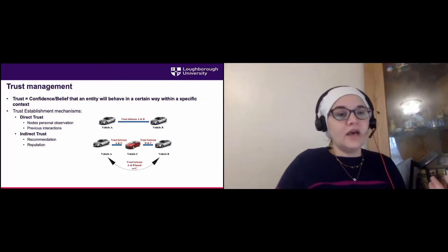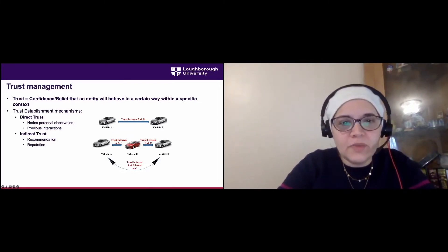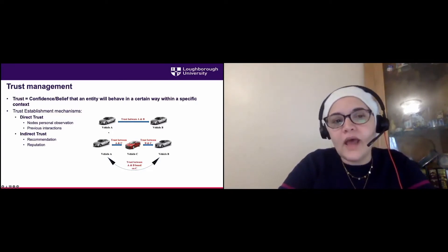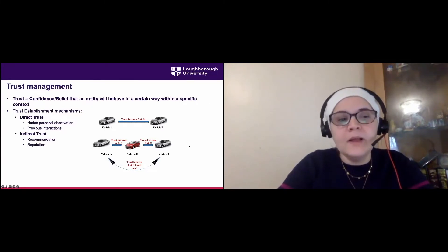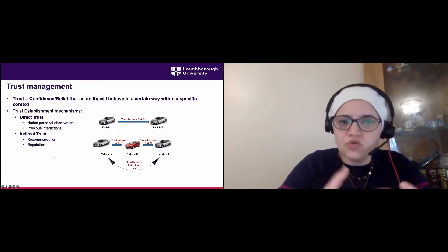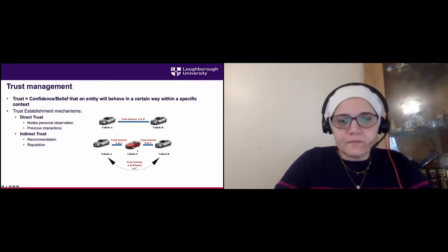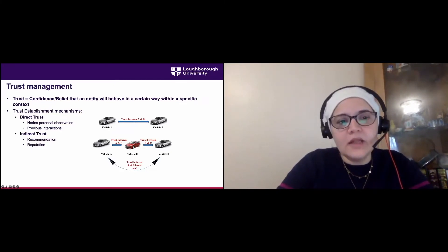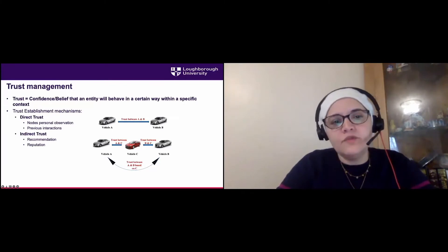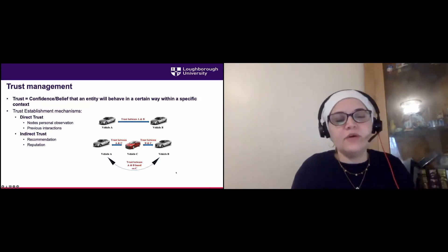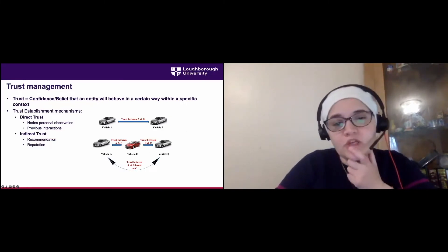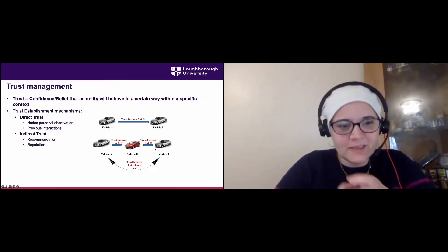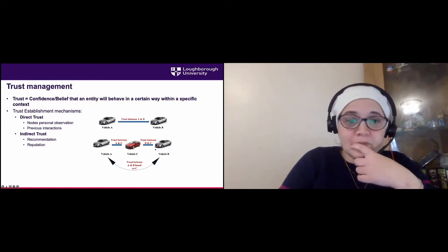We have two types of trust. Direct trust: vehicle A and B are neighbors within range, so A can observe B's behavior and messages and decide whether to trust B. Indirect trust — also called recommendation — is used to build reputation systems: vehicle A knows vehicle C, C knows vehicle B, so A uses C's recommendation about B. A can say 'I trust C so I'll trust their recommendation,' or 'I don't trust C, so I won't trust their recommendation.' That's the basic reputation mechanism.